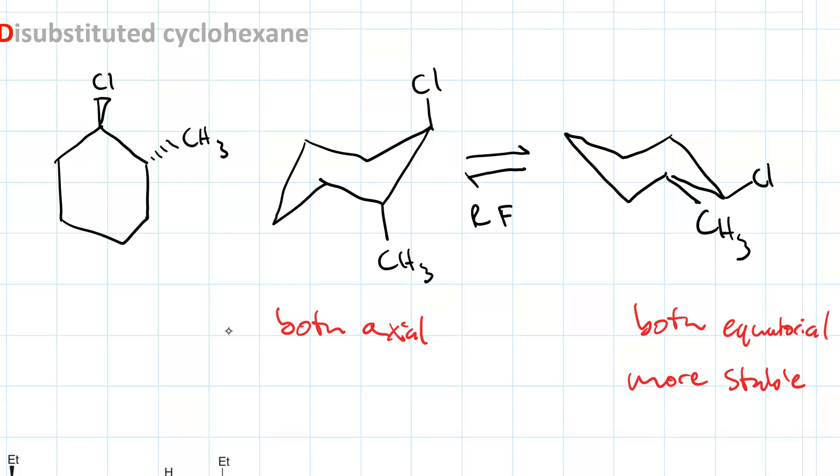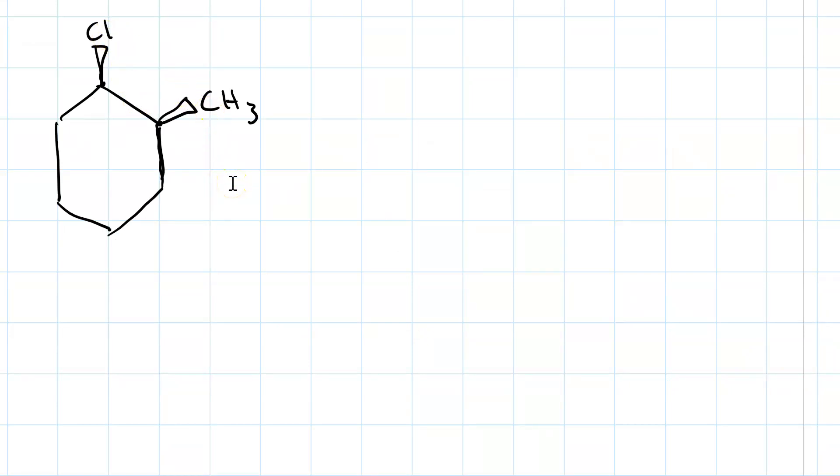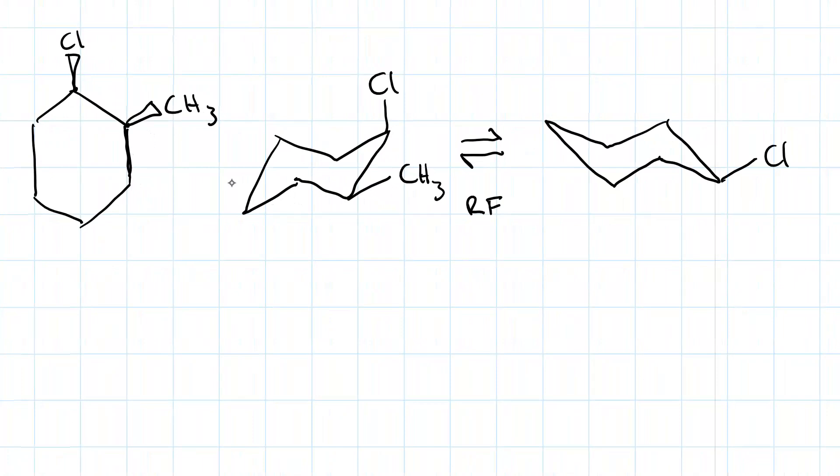All right. What if we put both of our substituents on a wedge? Then, our two chairs are like this. So, which of these is less stable? Well, I put it to you that a CH3 is bulkier than a Cl. So, it's worse, the structure on the right, that has the methyl group axial. So, this one is more stable.